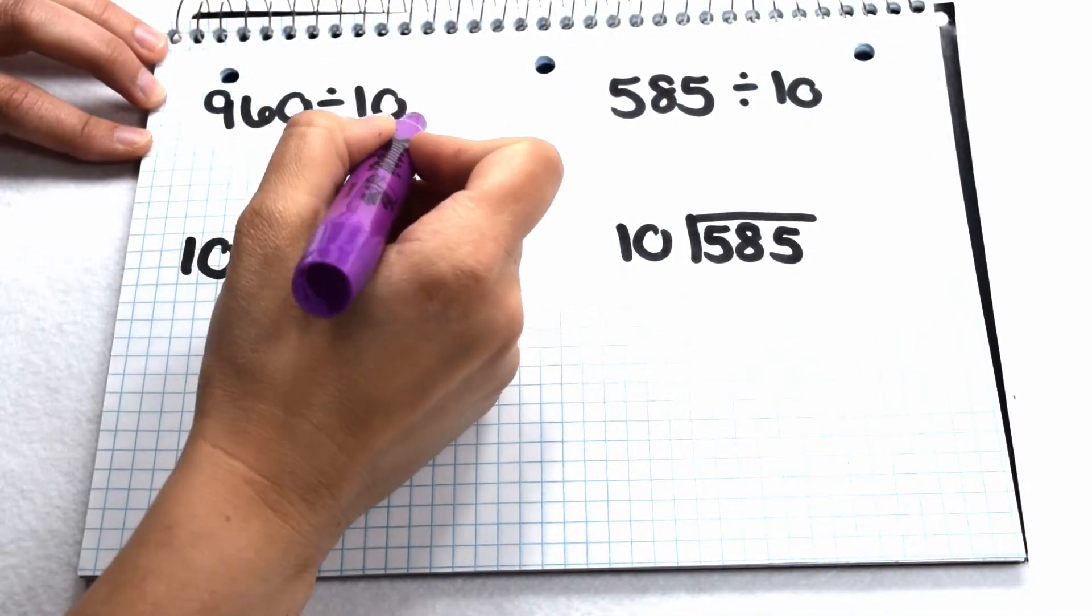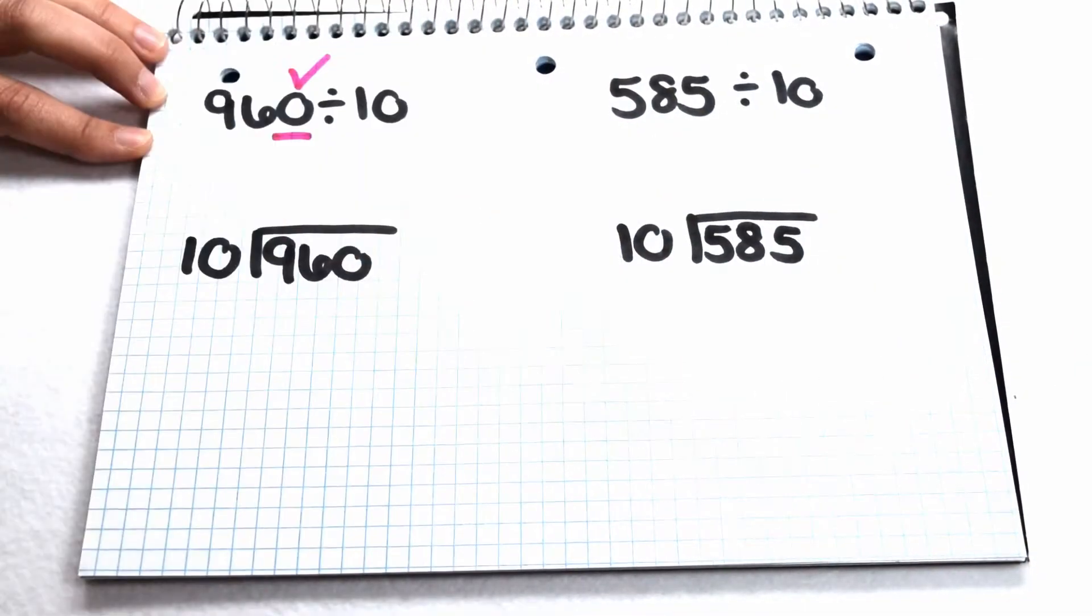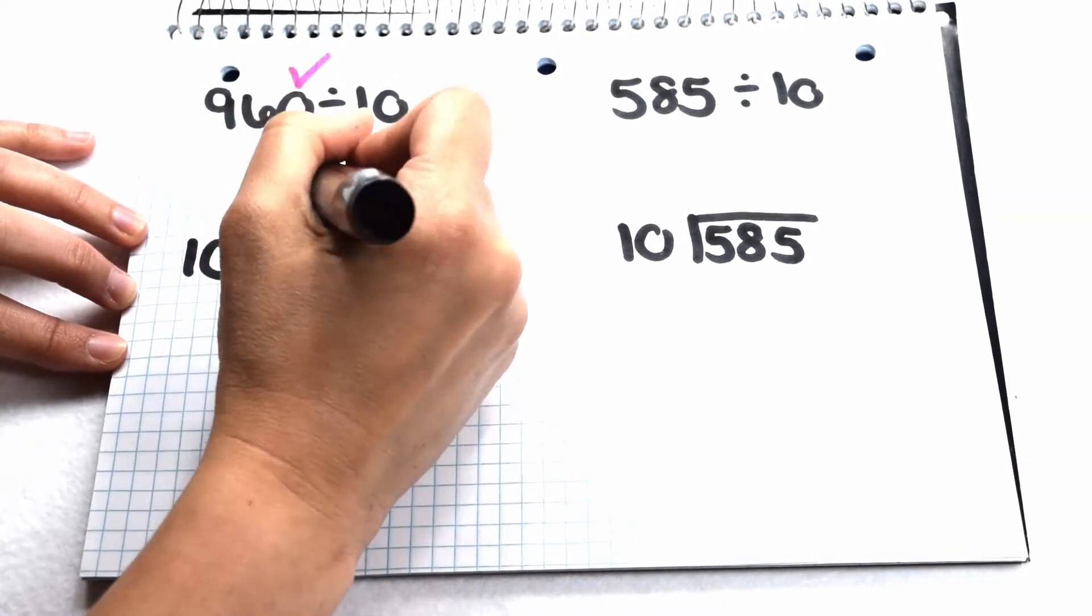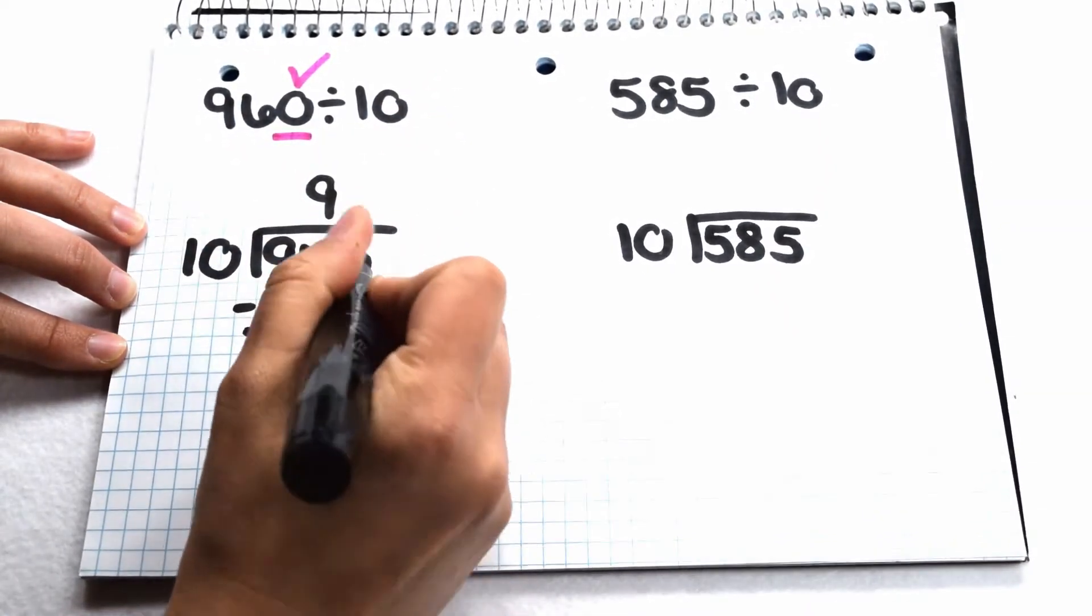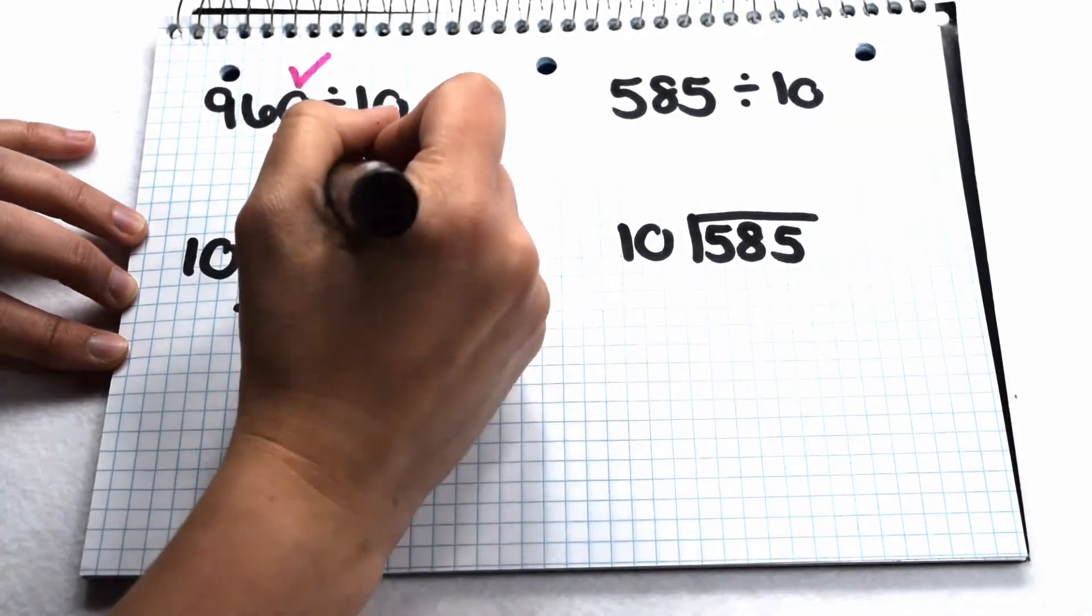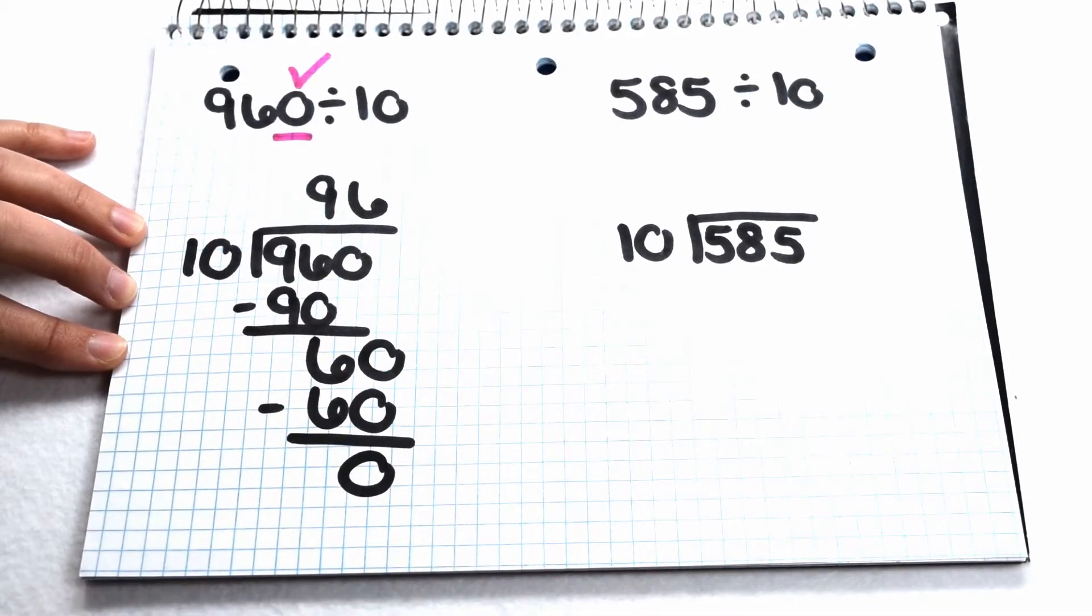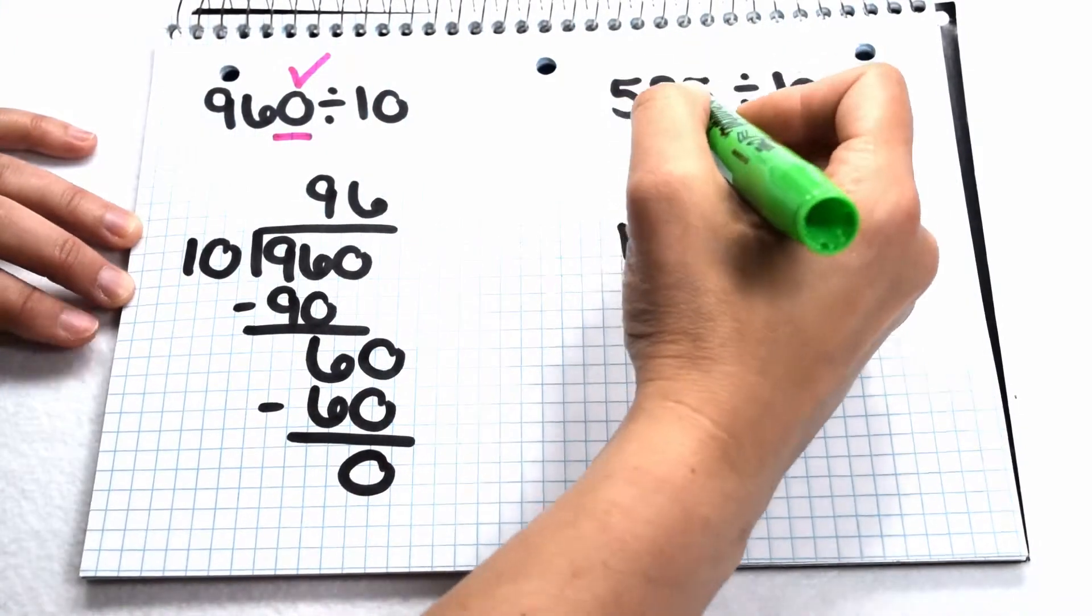We can use this to see if larger numbers are divisible by 10. Here we have 960 divided by 10. 960 ends in zero, that tells me 960 should be able to be divided by 10 with no remainders. Let's test it out. 10 goes into 96 nine times. I need to subtract 90, and when I do that, leaves me with 6. Bring down my 0. 10 goes into 60 six times. Subtract 60 and I have nothing left over.